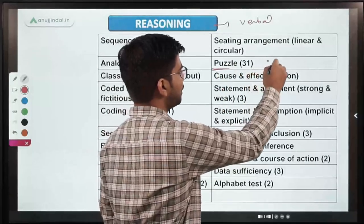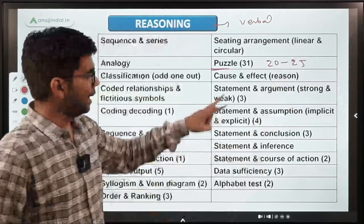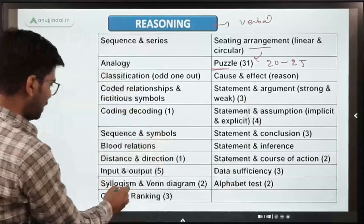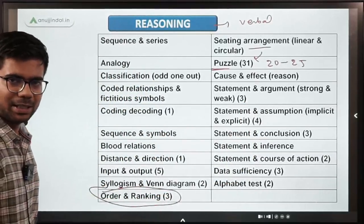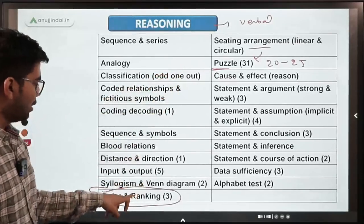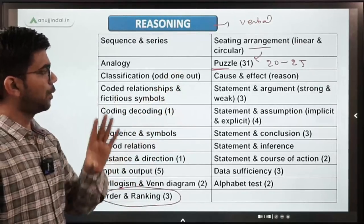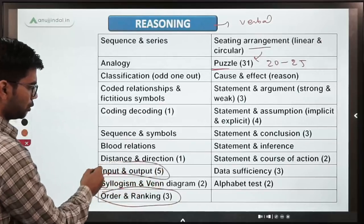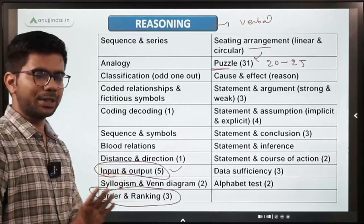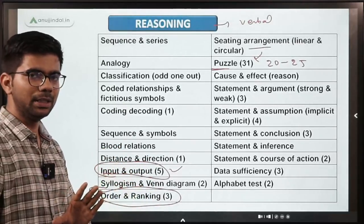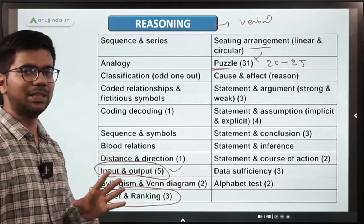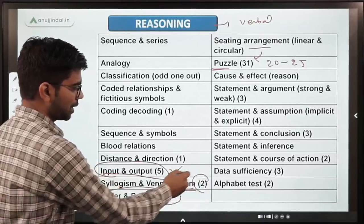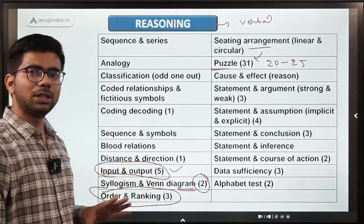From puzzles you can easily expect 20 to 25 questions. Seating arrangement and order and ranking are also considered part of puzzles. Apart from that, input-output generally consists of 4 to 5 questions and is very scoring — you can often score 5 out of 5. Syllogism and Venn diagram also give 2 to 3 scoring questions if you are thorough with the concepts.